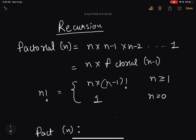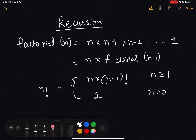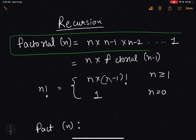Now as we know that in mathematics, if I want to define factorial of n, it will be defined as the product of first n integers. We can also write it in a simpler way as n into factorial of n minus 1.